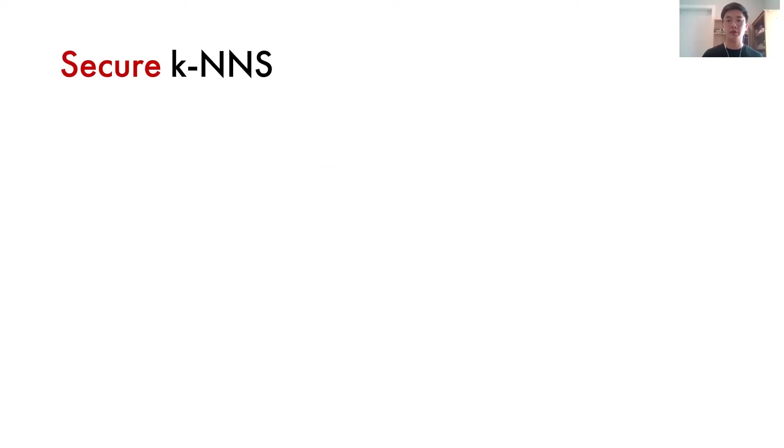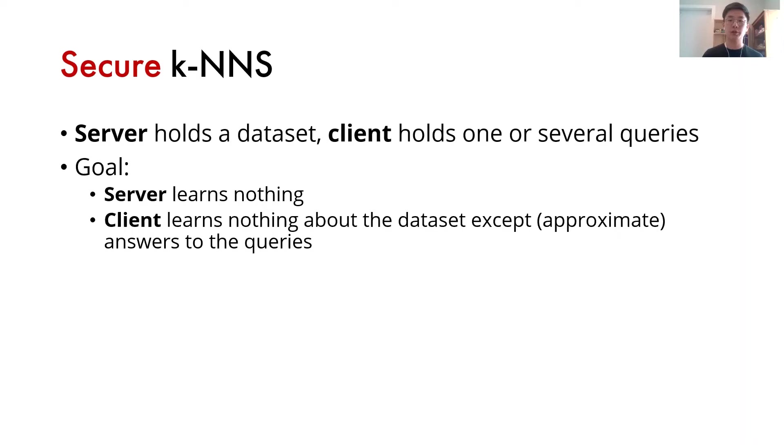Next, we introduce the secure k-nearest neighbor search problem. The setting includes two parties, a server and a client. The server holds a dataset, and the client holds one or several queries. The goal is for the server to learn nothing about the query, whereas the client learns nothing about the dataset, but it learns approximately correct answers to the k-nearest neighbor queries.